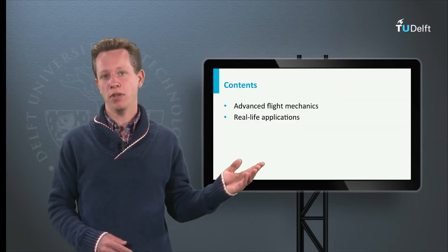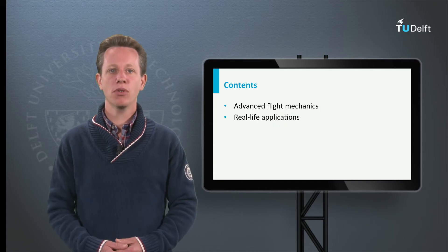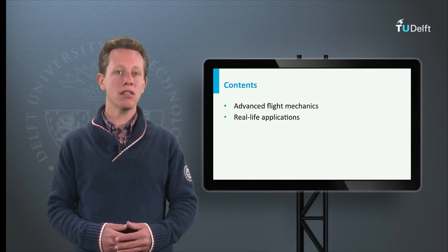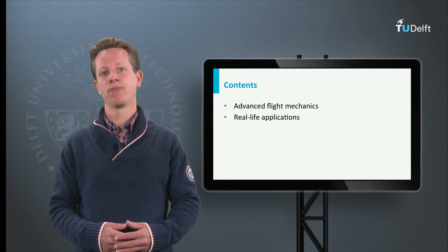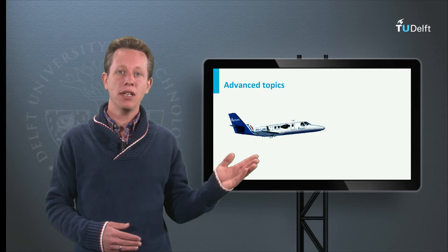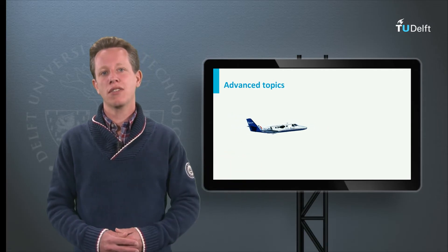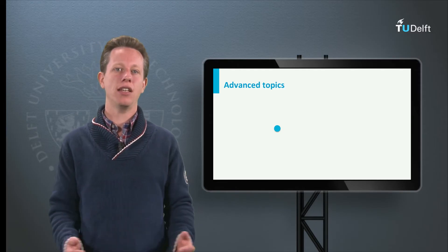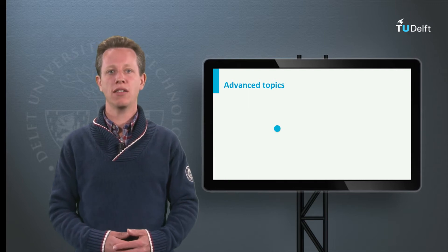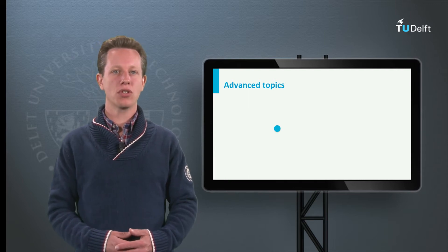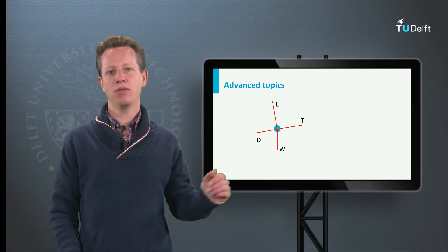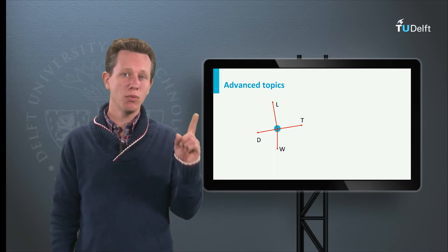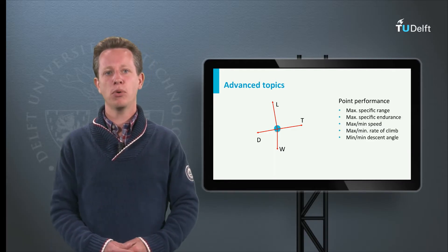Let me start with the advanced topics. It is important to understand which fundamental assumptions I have made during all the lectures to simplify the complexity of a complete aircraft. What I did is that I treated a complete aircraft as a point mass — a single point in which all the mass is concentrated, which does not have any inertia, so rotational motion is neglected and on which all forces act. Based on this simple model I calculated the best possible performance of the aircraft at one moment in time. This is what we call point performance.